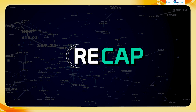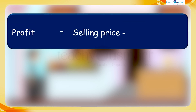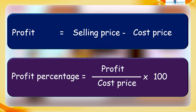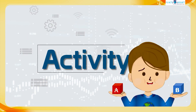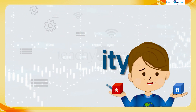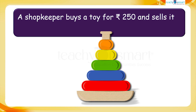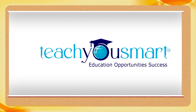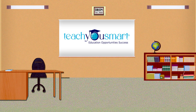Let's have a quick recap. Today we discussed how to find profit and profit percent. Let's check how much you understood by doing an activity. A shopkeeper buys a toy for rupees 250 and sells it for rupees 285 — find his profit and profit percentage. That's all for now, see you all in the next class with another interesting topic.